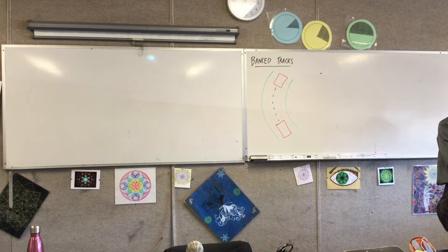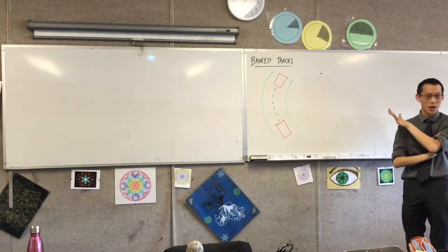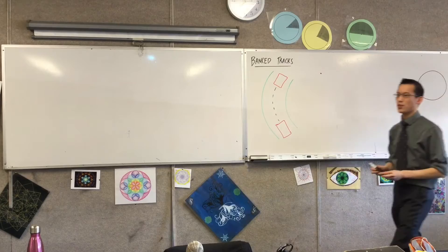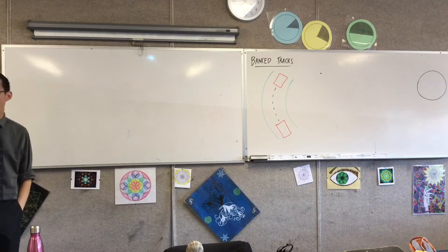In this lesson we're going to look at banked tracks. Before we get started on what that is and how to work with them, I just want you to remember we're still under this idea of circular motion. Within our scheme of circular motion, you've got two kinds of velocity. Do you remember what the two kinds are? Two kinds of ways of describing how things are moving.